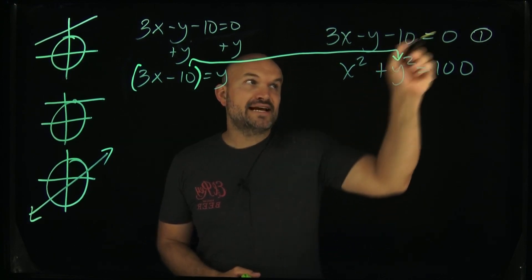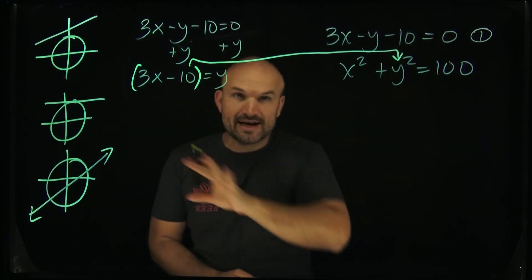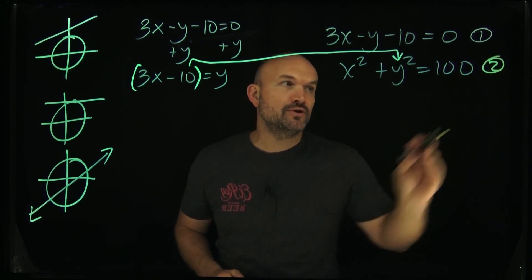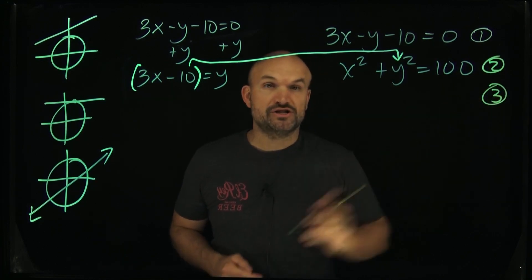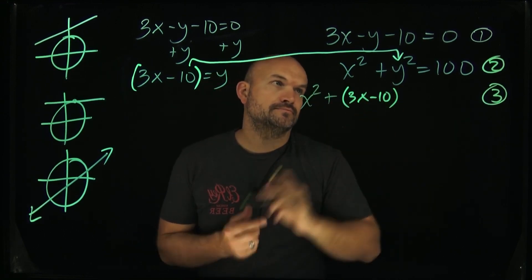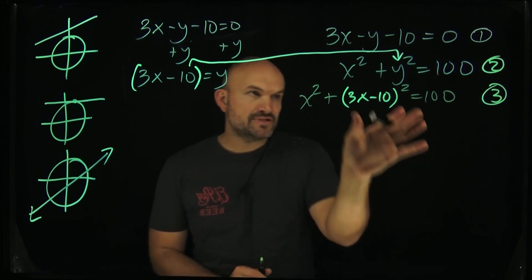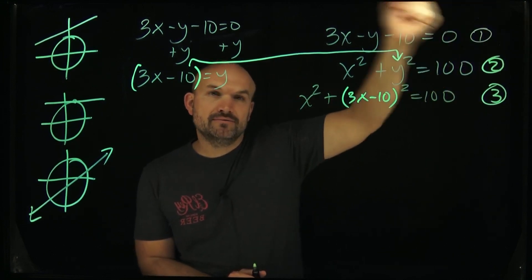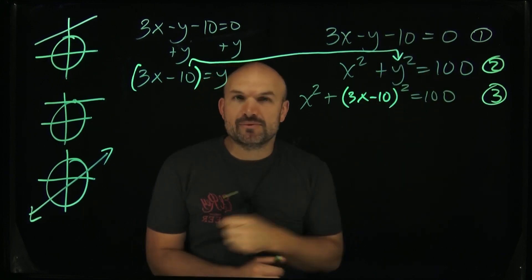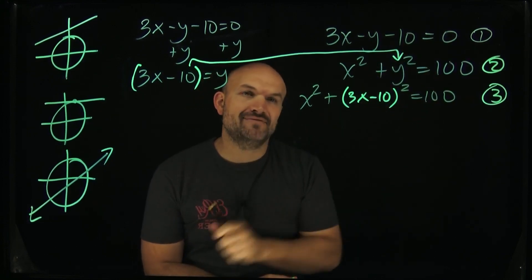I've taken equation one and rewritten it where it's solved for a variable. Now I'm going to plug it into equation number two, which is going to provide me with equation number three. You can see that taking equation one, rewriting it as solved for a variable, plugging it into equation two gives me equation three. Notice what my variables are here, guys. Now I only have x's. That's good, that's what I want.